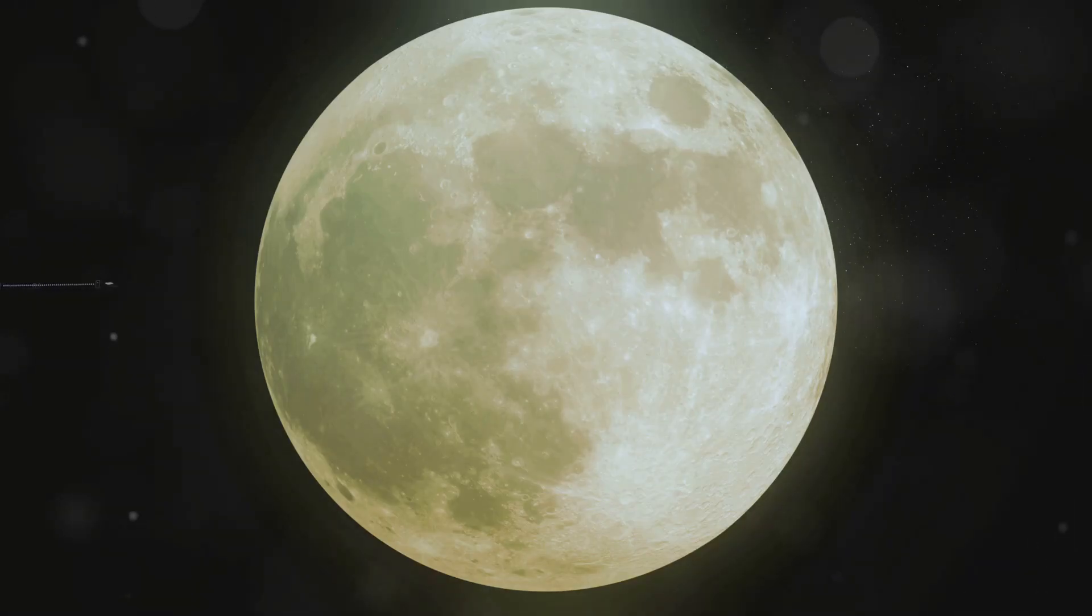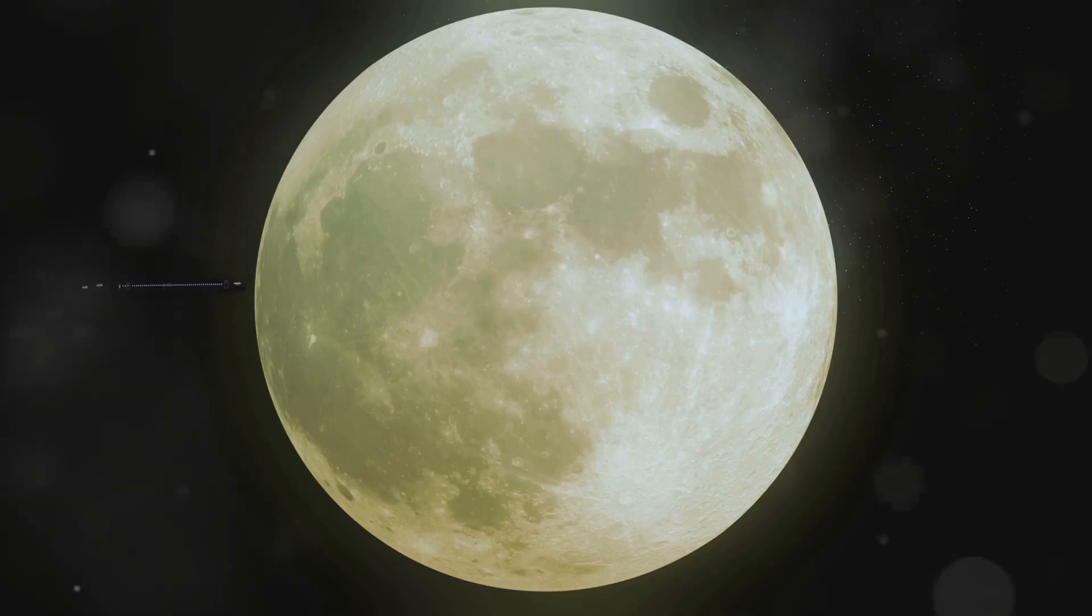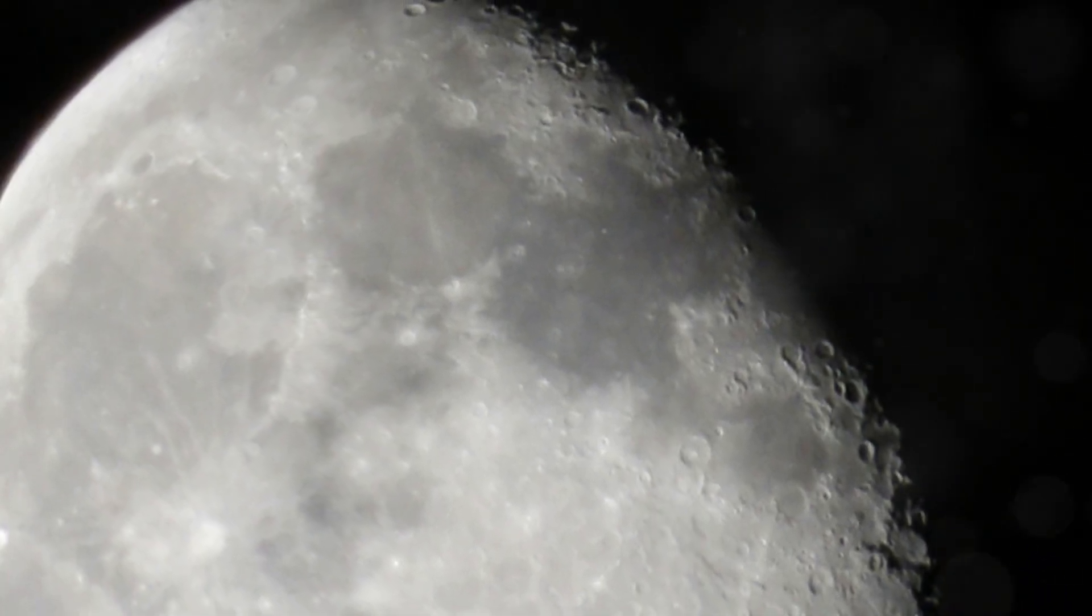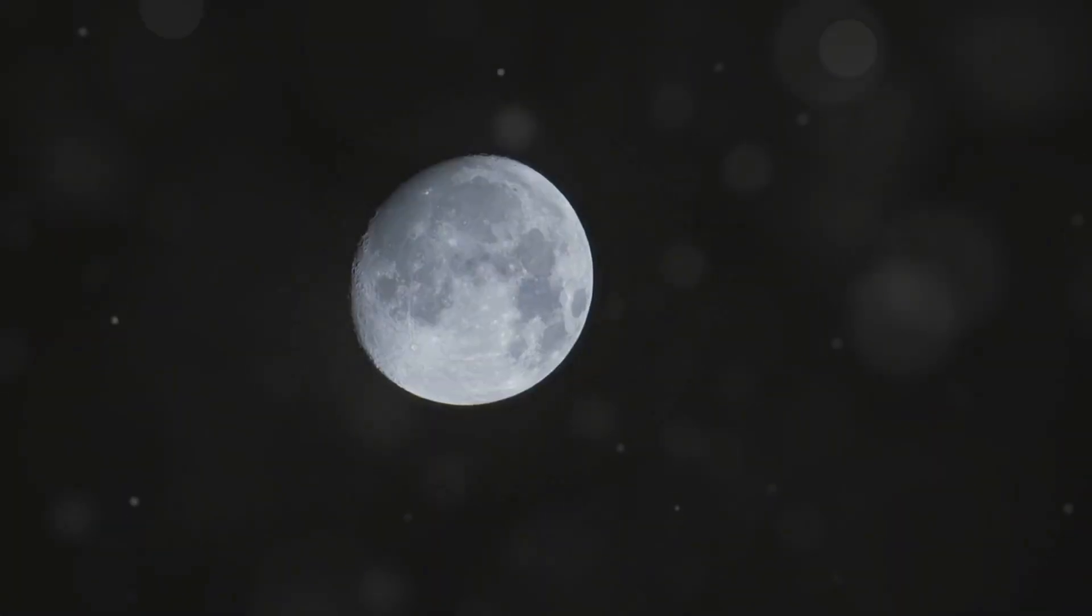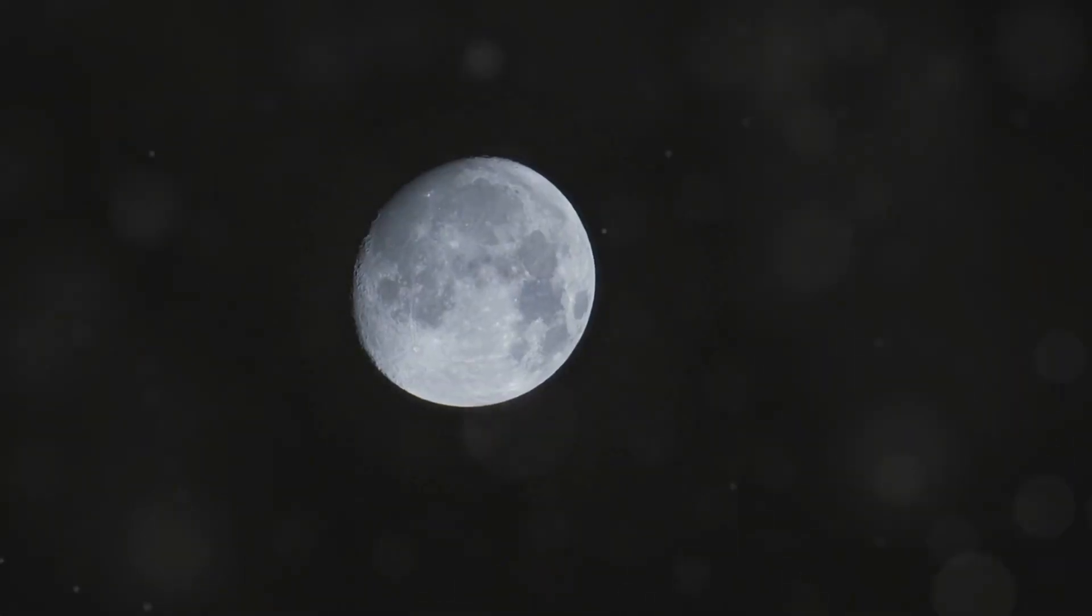Now every 18.6 years, the moon reaches its maximum and minimum extremes of this tilt. We call these points the major and minor lunar standstills. During these periods, the moon's declination, its position north or south of the celestial equator, hits its highest highs and lowest lows. It's like the moon is taking a deep breath in and out.